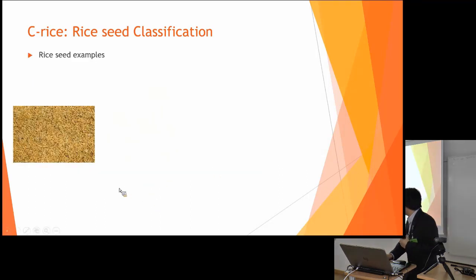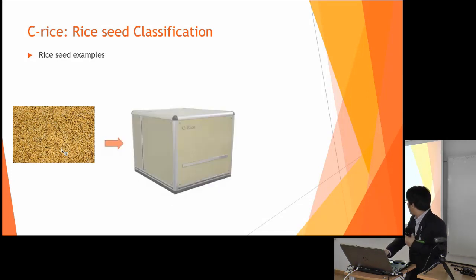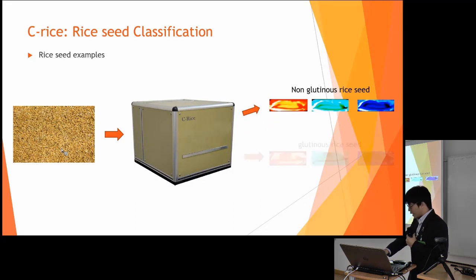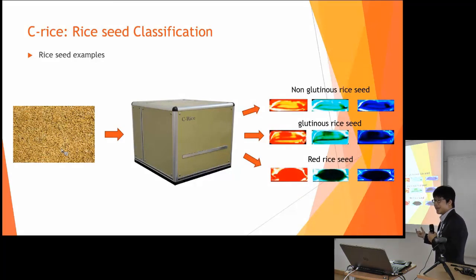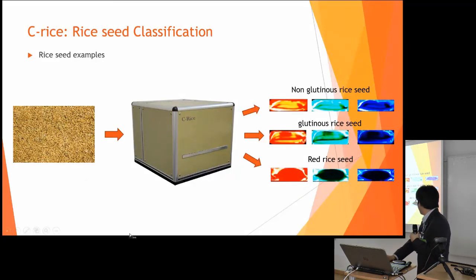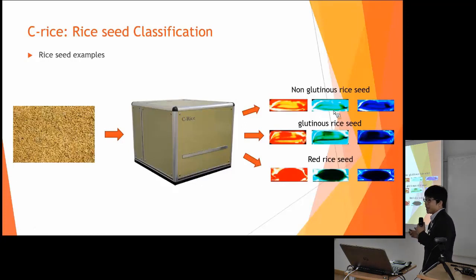We wanted to find a way to classify rice without breaking the outer part of the seed. The rice seed is yellow on the outside, with the grain inside. Using our technique, we can see the difference between the three types without breaking the outer part. For the red rice seed, you can see it is more absorbed and appears red all the way through, while for the regular rice, it is much clearer. We can classify all three types without breaking any outer part using this device.